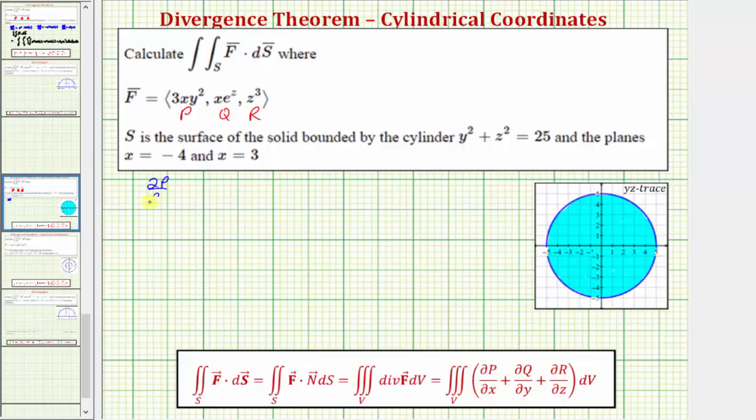The partial of p with respect to x is equal to the derivative of 3xy² with respect to x, which would be 3y².